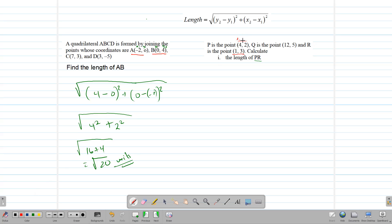So this becomes x1, y1, and x2, y2. Plugging them into the formula, we have y2, which is 3, take away y1, which is 2, square, plus 0. x2, which is 1, take away 4, square.